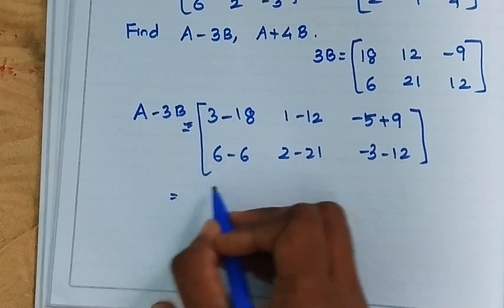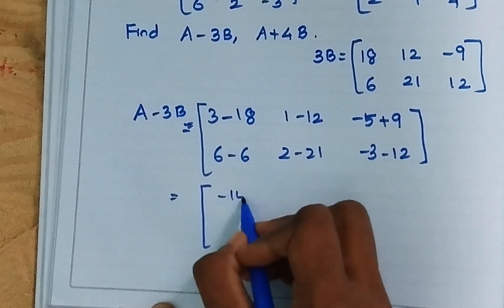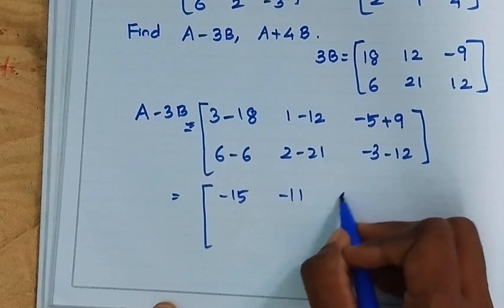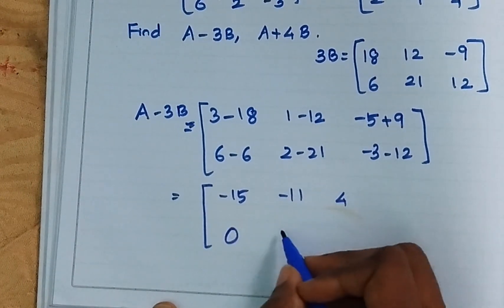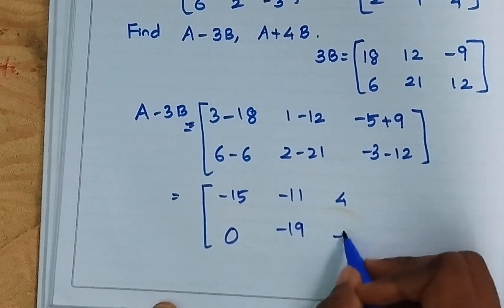That is minus 15, minus 11, 4, 0, minus 19, minus 15.